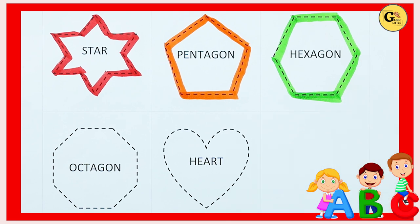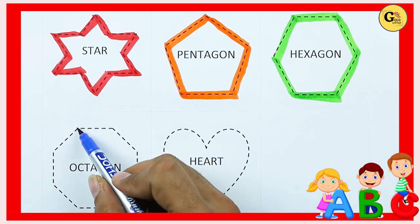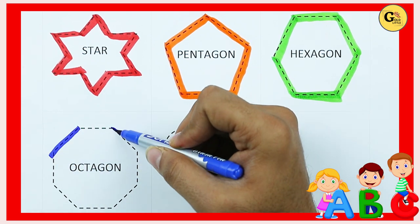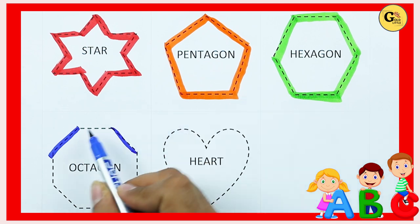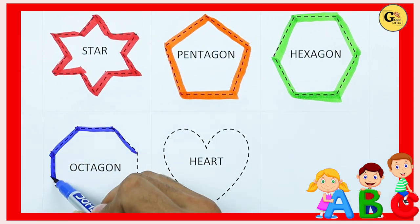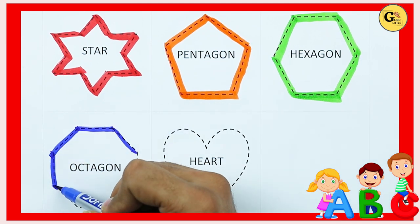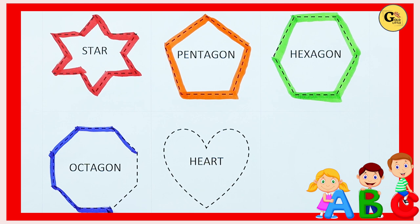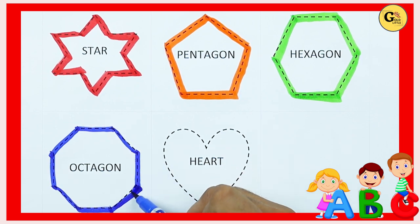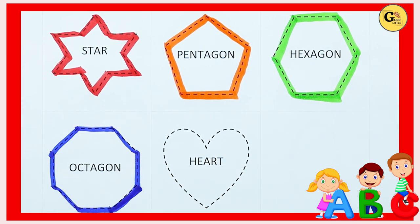Octagon: one line, two line, three line, four, five, six, seven, eight. Eight lines means octagon.